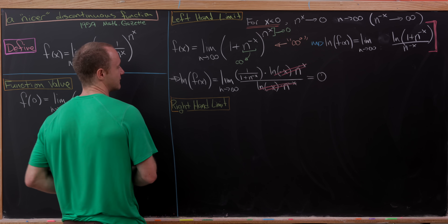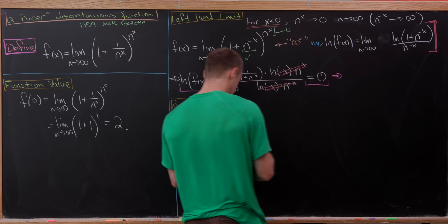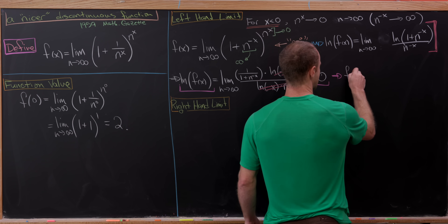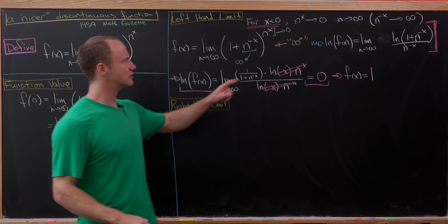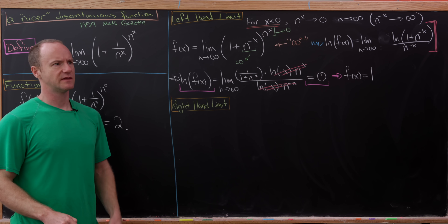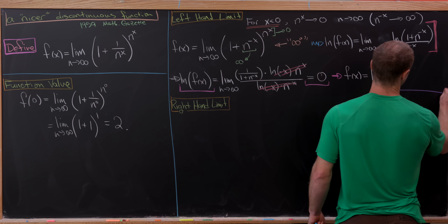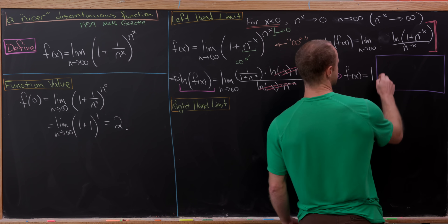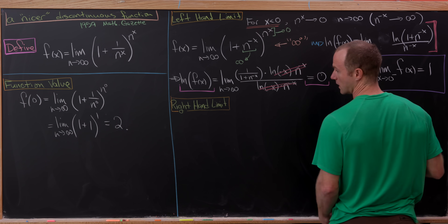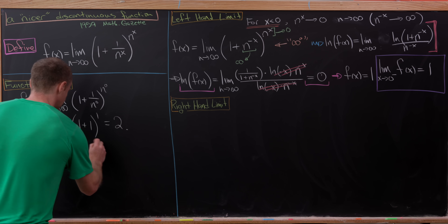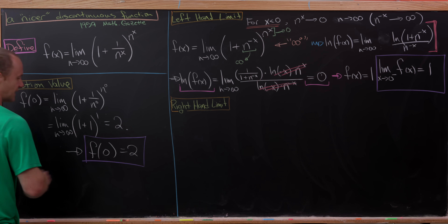So we have the natural log of f of x equal to 0. Taking the exponential of both sides tells us that f of x equals e to the 0, which is 1. And this holds for all values of x less than 0 — meaning f is a constant function equal to 1 for all negative x. So the limit as x goes to 0 from below of f of x is equal to 1. But notice that's different from our function value f(0) = 2, so the left-hand limit and the function value are not the same.